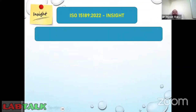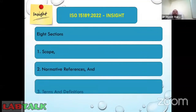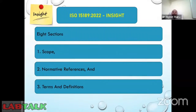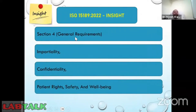Now for a brief overview of the standard's structure. The previous standard ISO 15189:2012 had five main clauses, but the new standard has eight sections. Sections one, two, and three remain the same — covering scope, normative references, and terms and definitions. Section four introduces a change, addressing general requirements.